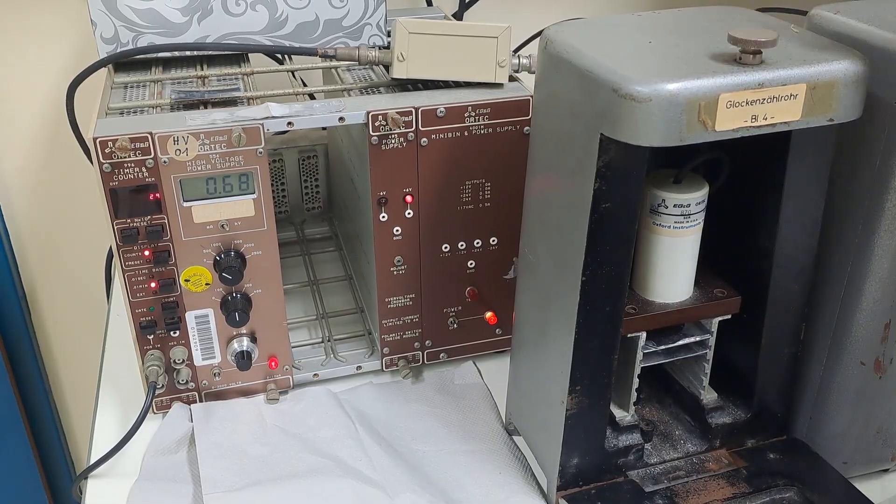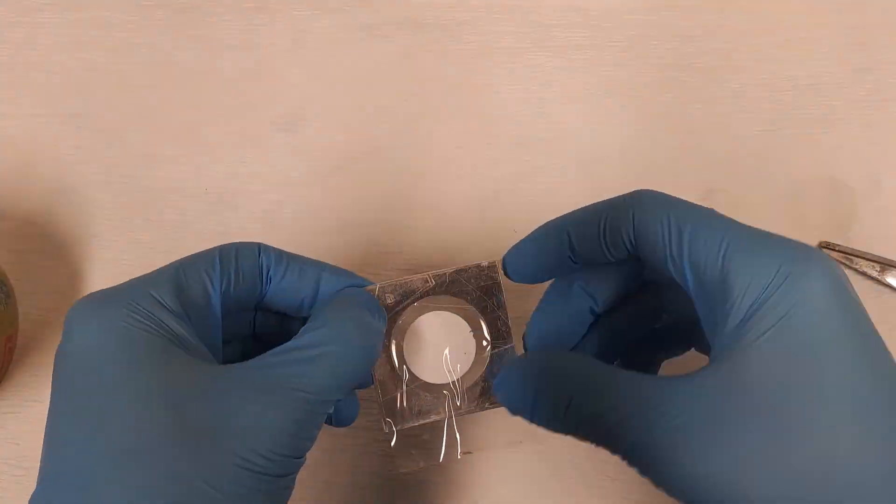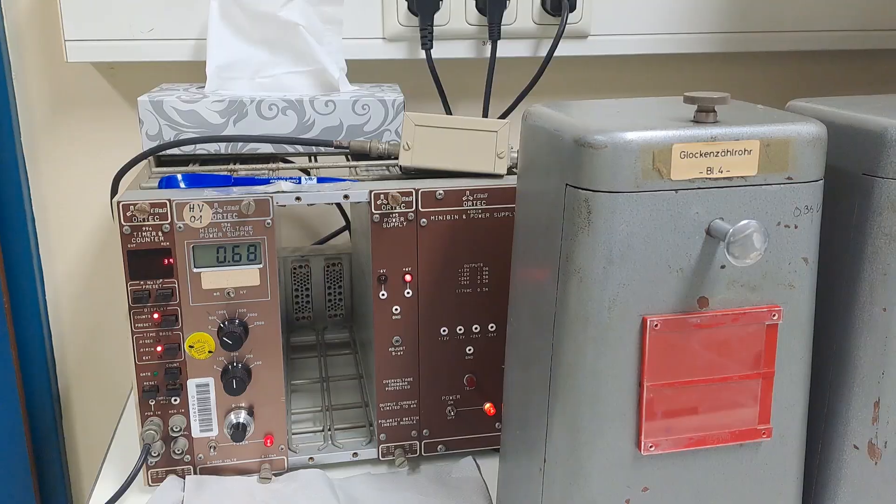And finally, cover the sample with another layer of adhesive tape and measure again. Now this sample is considered a closed source, making the disposal much easier.